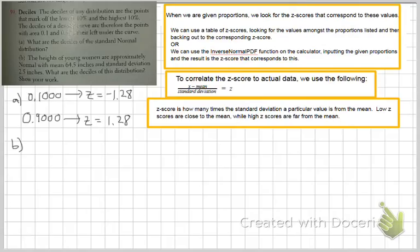If we go to part b and we are given that the mean is 64.5 and sigma, our standard deviation is 2.5 inches. We're going to use the z-score that we calculated in the first part. We're going to use this formula here.